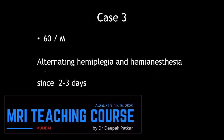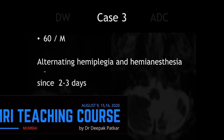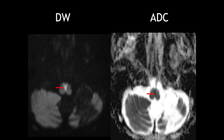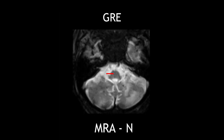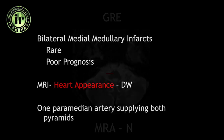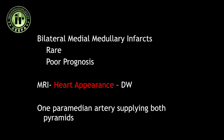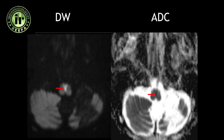This is a 60-year-old male who came with alternating hemiplegia and hemianesthesia since two to three days. MRI of the brain showed restricted diffusion in the medial medulla bilaterally, giving a classical heart-shaped appearance. There was no blooming on GRE, and MR angiography was within normal limits. This restricted diffusion in bilateral medial medulla is due to medullary infarct, which is rare and has a bad prognosis. The classical heart-shaped appearance on DWI is due to one paramedian artery supplying both pyramids.